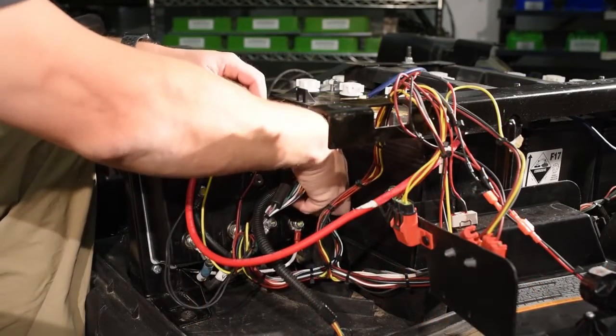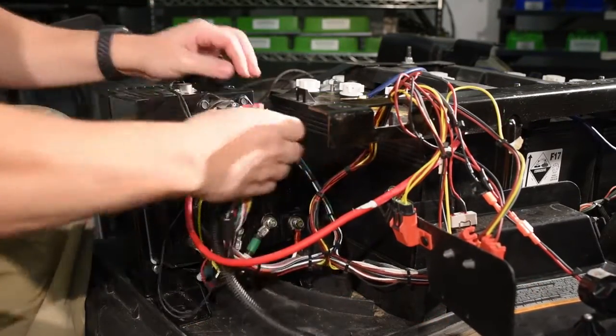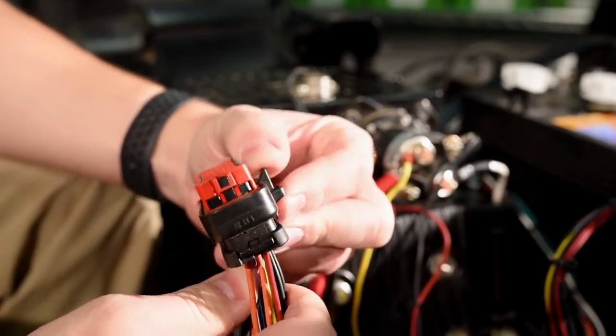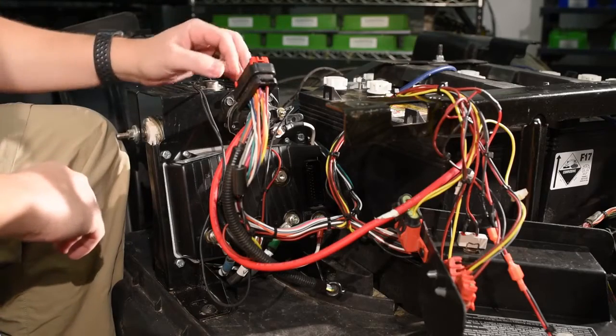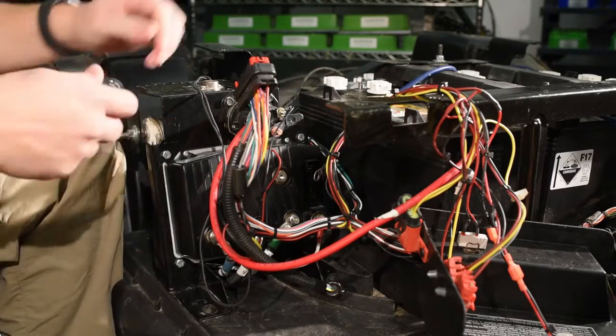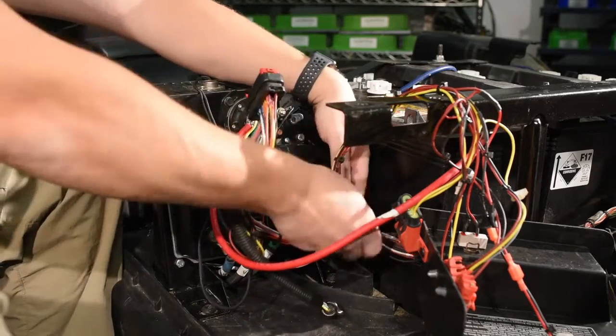Remove the connector - there's a tab on here that you'll have to pull up using a small screwdriver. Next, remove the resistor wires. Remove the one from the solenoid, then remove the one from the bottom of the controller.